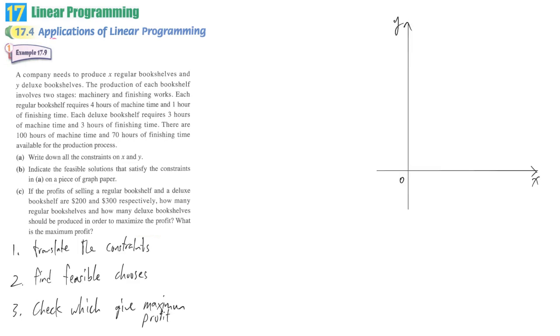So the first stage, we need to translate the constraints because it's just some sentence that is not well organized. After we set the constraints, we have to use the line to find out the feasible choice within the certain region.